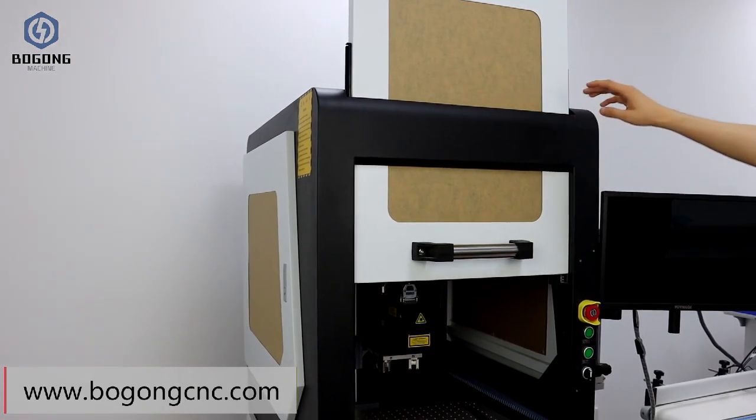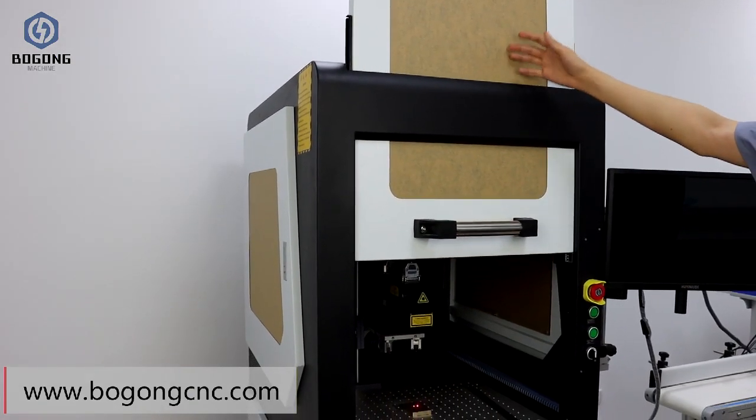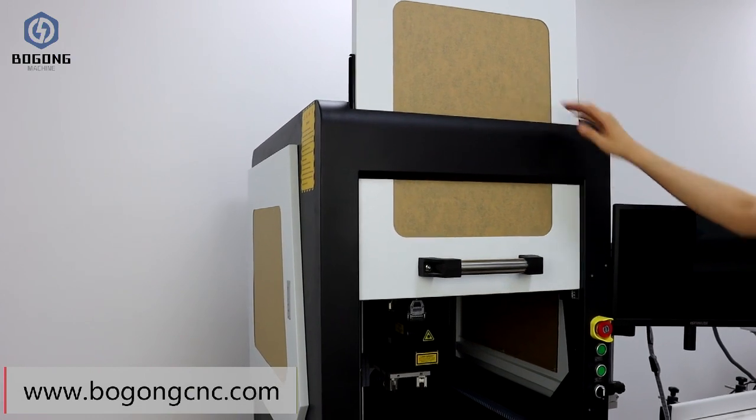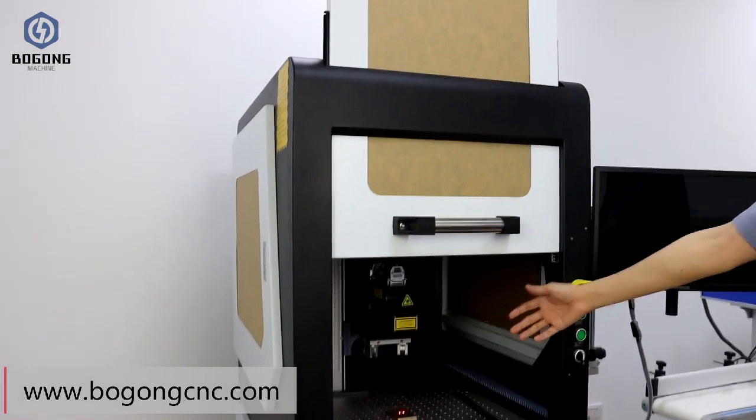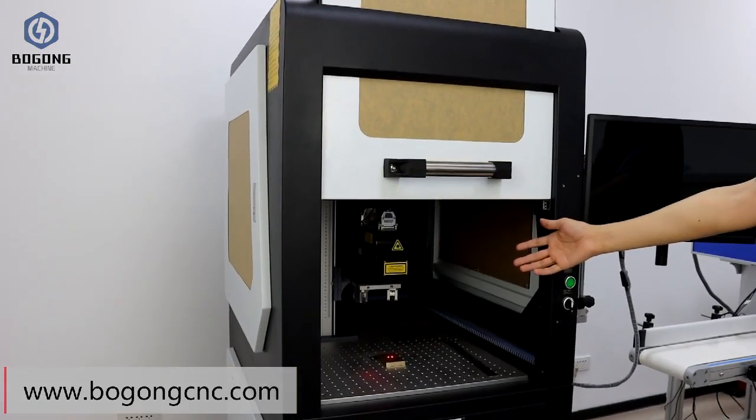Of course, you can see the inside through the acrylic. This is a manual door. After opening the cover, here is the core working area of this machine.